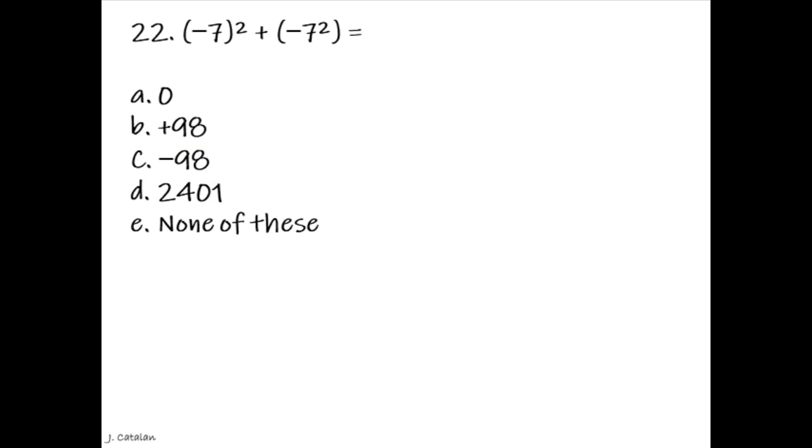Question. Negative 7, multiplied by the second power, added by, negative 7 to the power of 2, equals. Answer. 0.